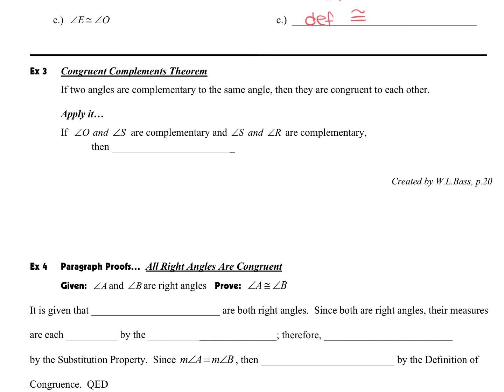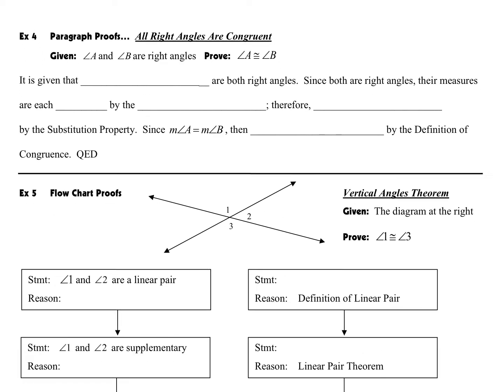Next we're going to look at congruent complements. It works the exact same way, except the angles will be complementary to the same angle. So if two angles are complementary to the same angle, then those two angles are congruent to each other. For example: angle O and angle S are complementary, and angle S and angle R are complementary. Find what they have in common — that's angle S. What is left over are the two that are going to be congruent, so angle O is congruent to angle R.